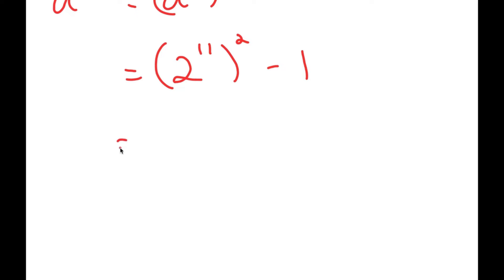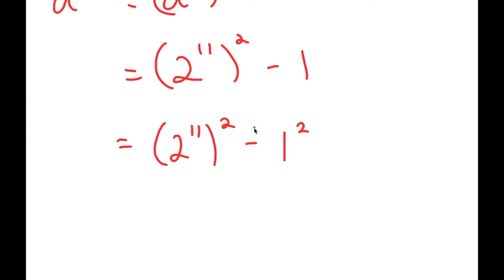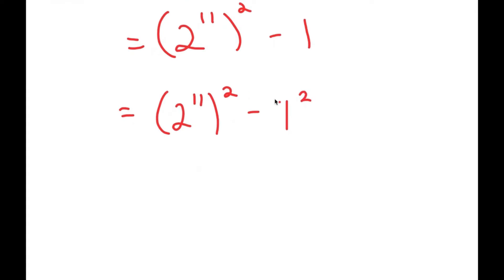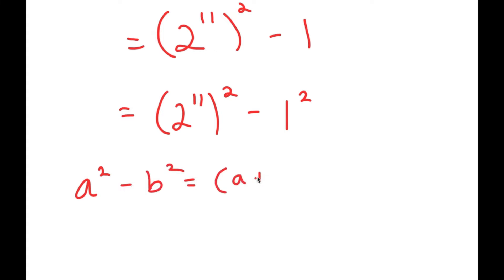Now, 1 is the same thing as 1 squared, so now I have 2 to the power of 11, to the power of 2, minus 1 squared. The reason I rewrote 1 as 1 squared is because now I can use the property a squared minus b squared is equal to a plus b times a minus b.